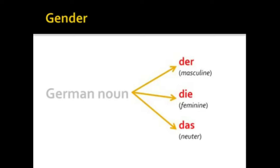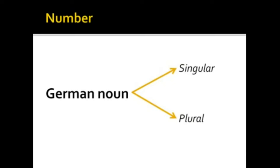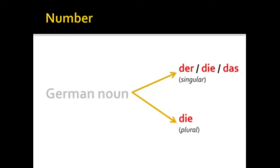In addition to gender, a German noun will indicate number — it is either singular or plural. If a German noun is singular, it will be masculine, feminine, or neuter, preceded by 'der', 'die', or 'das'. If a German noun is plural, it will only indicate the number, not the gender. Therefore, it will only be preceded by the definite article 'die'.